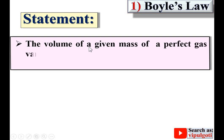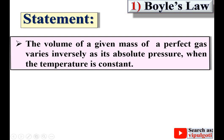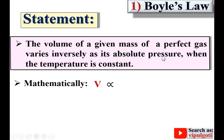Statement: the volume of a given mass of a perfect gas varies inversely as its absolute pressure when the temperature is constant. So you have to remember, for Boyle's law, temperature is constant. Mathematically, we can write volume is inversely proportional to its pressure, where V is volume and P is pressure.